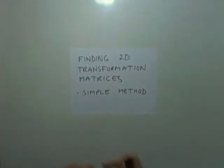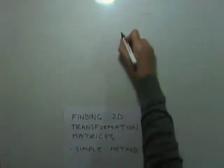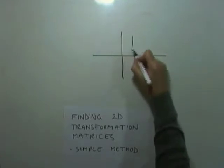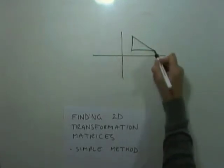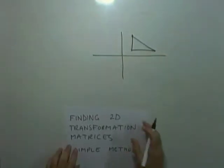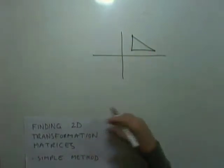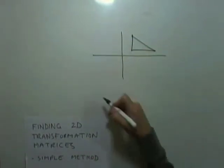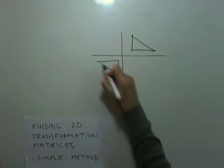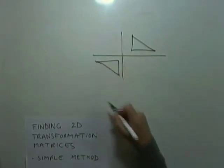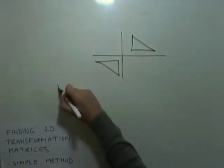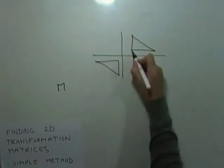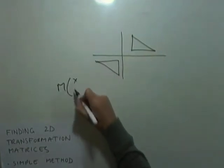Right, a simple method for finding two-dimensional transformation matrices. By that meaning, if you have some shape in the plane made up of three points which are going to be transformed by, for instance, rotating it halfway about the origin, what would the matrix be that would take these three points, these initial three points,